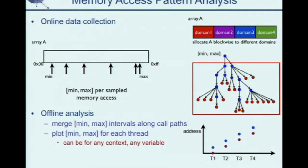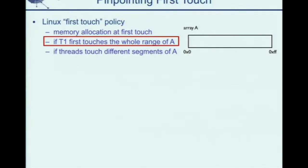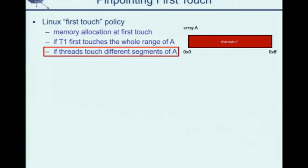How can we actually distribute data in a block-wise way? The Linux kernel by default uses the first-touch policy to allocate memory pages — a memory page is allocated to the NUMA domain of the thread that first initializes that page. So if thread T1 first touches the whole range of array A, array A will be allocated in NUMA domain 1. But if all threads touch different segments of array A, the array can be allocated across different NUMA domains. We need to identify the first-touch location in the source code to perform the optimization.